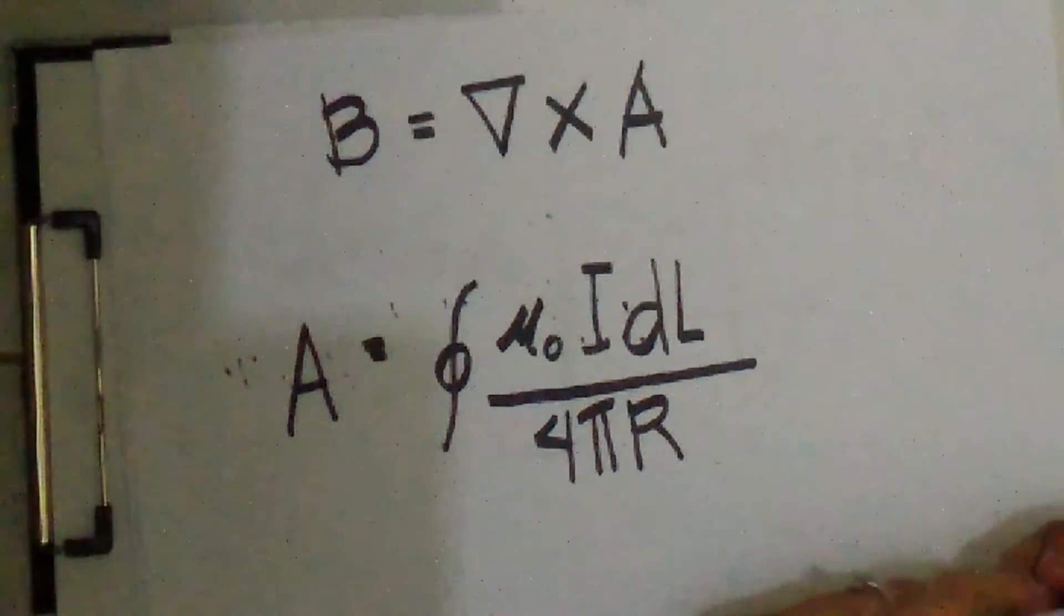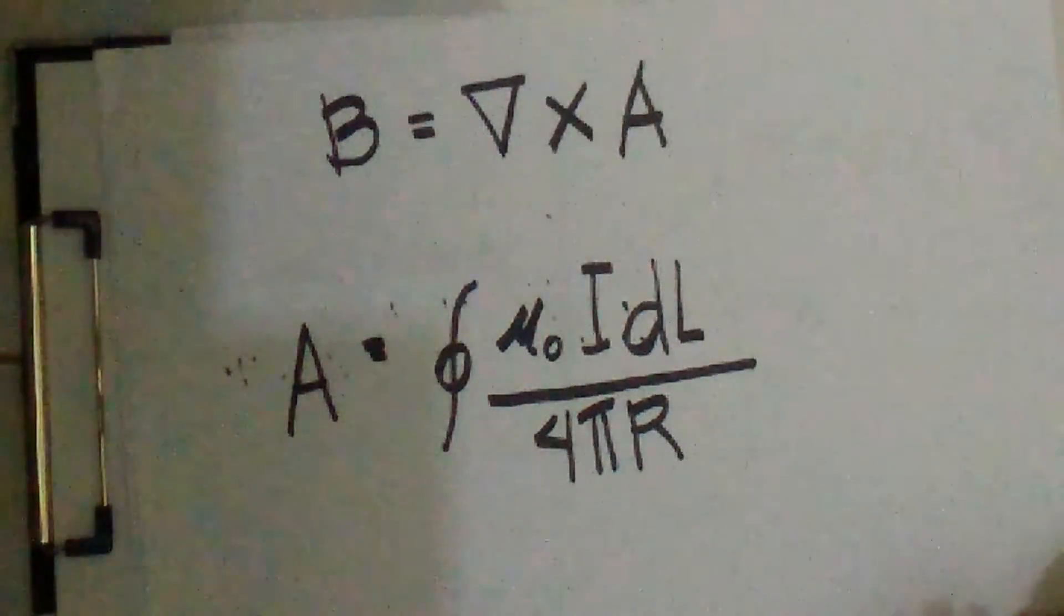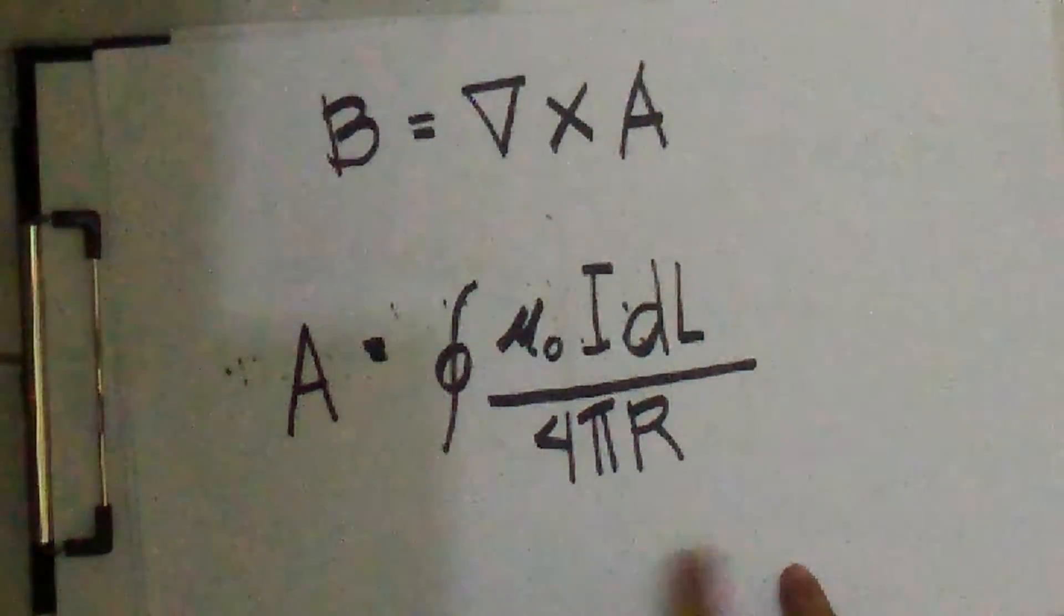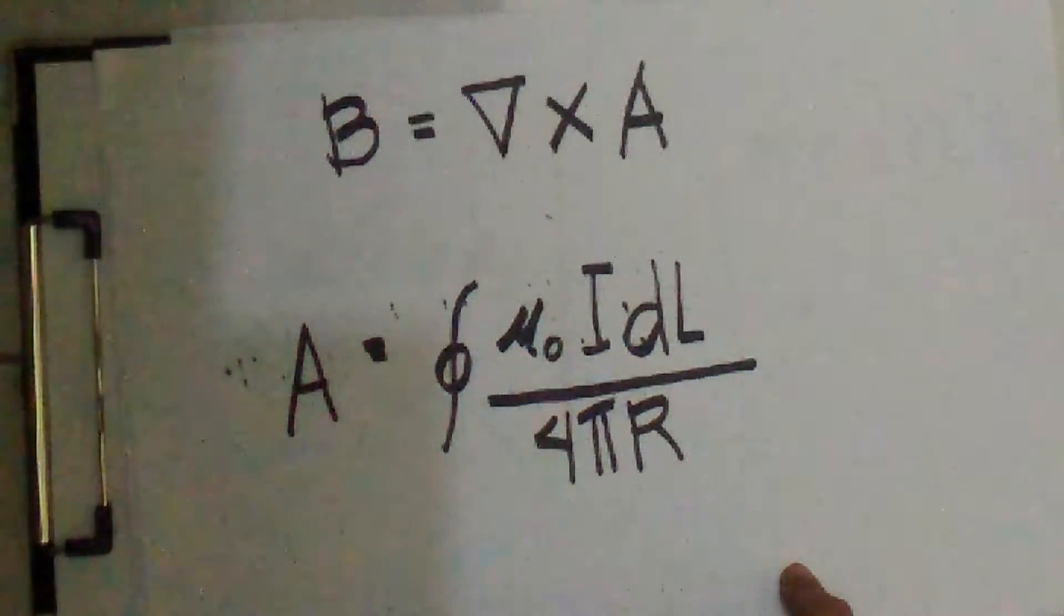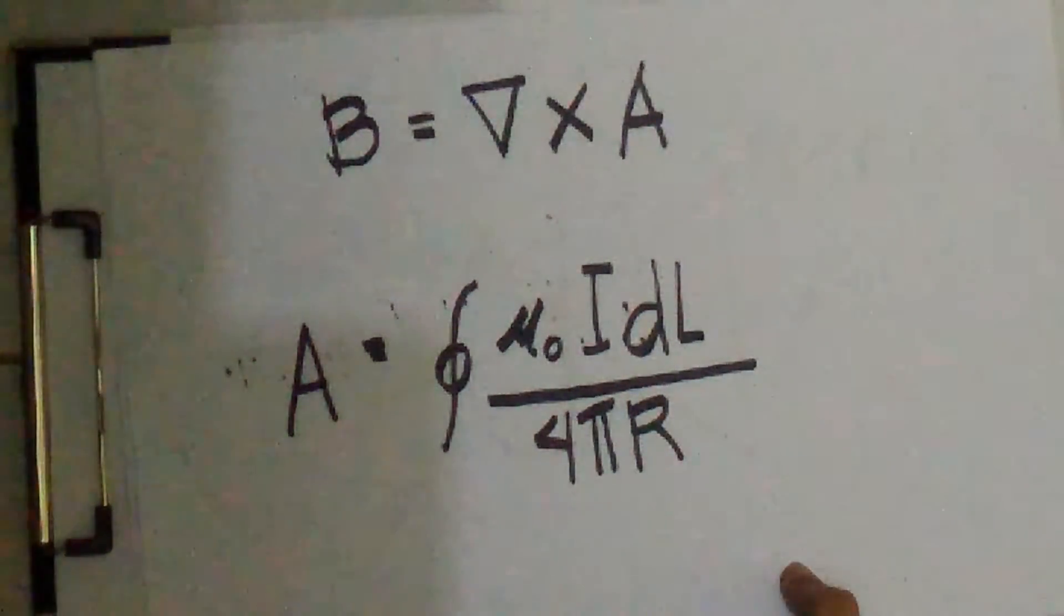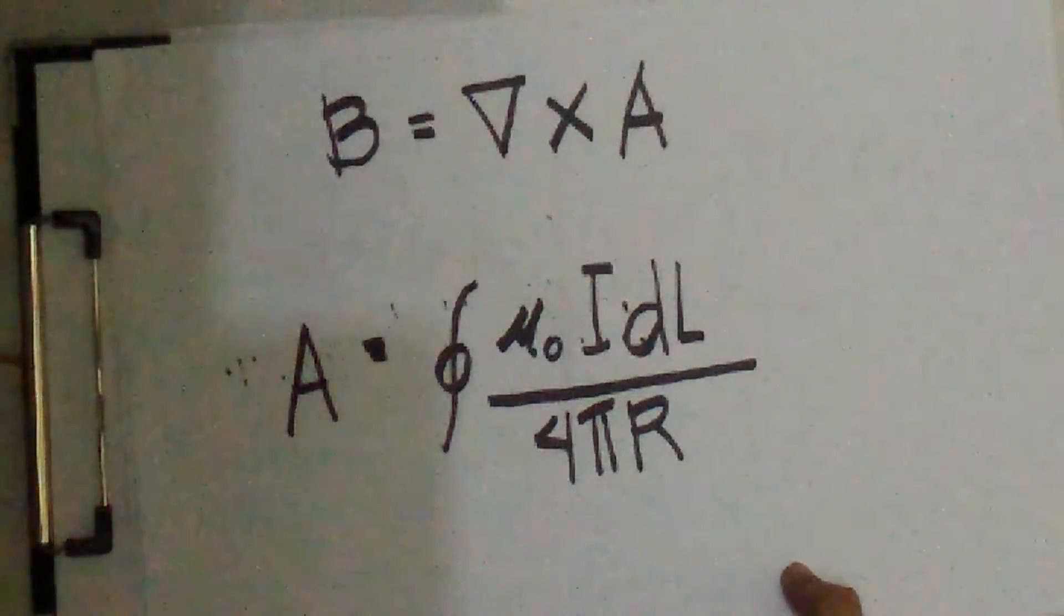The significance of that term is the same as in the Biot-Savart law. A direct current flows along a filamentary conductor of which any differential length dL is distance R from the point at which A is to be found.